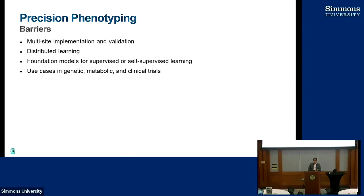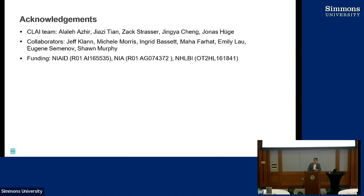So there are barriers. Multi-site implementation and validation — this is not specific to precision phenotyping algorithms, but I think precision phenotyping algorithms are going to require a little bit more compute resources than simple phenotyping algorithms. Distributed learning is an area that has not been evaluated. Because there are so many functions, there are going to be different types of parameters — so is there a gold standard? I think it requires foundation models for supervised and unsupervised learning that are not currently available. Use cases in genetic, metabolomic, and clinical trials are not yet available — we are producing those use cases at the moment.